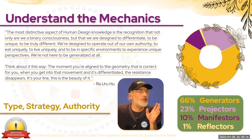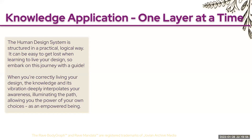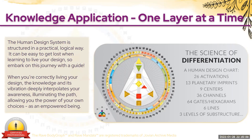The most distinctive aspect of human design knowledge is the recognition that not only are we a binary consciousness, but that we are designed to differentiate — to be unique, to be truly different. We are designed to operate out of our own authority, to eat uniquely, to live uniquely, to be in specific environments and experience unique perspectives. The moment you're aligned to the geometry that is correct for you, when you get into that movement and it's differentiated, the resistance disappears. The human design system is structured in a practical, logical way. When you're correctly living your design, the knowledge deeply illuminates the path, allowing you the power of your own choices as an empowered being.